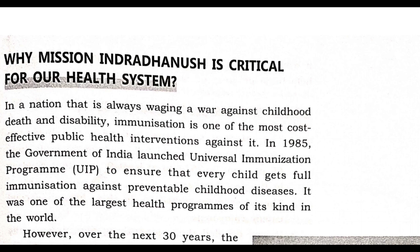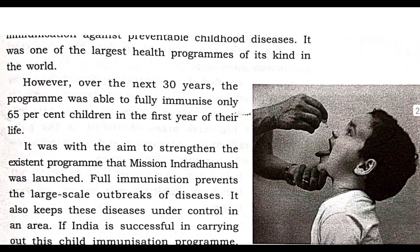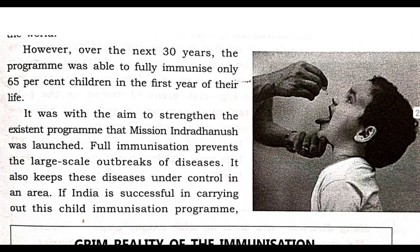In the picture you can see a child taking polio drops. However, over the next 30 years, the UIP program was able to fully immunize only 65 percent of children in the first year of their life — meaning out of 100 percent, only 65 percent were successfully immunized.